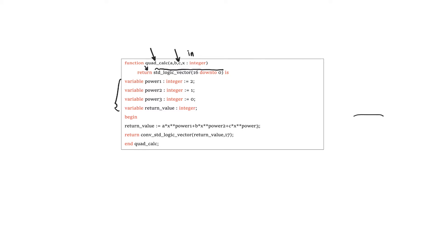In this case, we have four local variables declared for use within this function. After the begin keyword, we have the body of the function, which ends with the end keyword. We can use any statements within the body of the function that we can use in a process — any sequential statements. There is one exception: you cannot use wait statements in functions. At the end of the function, you have to use a return statement, and this return statement indicates what value we will be returning. The return value has to agree with the data type declared for the return type in the function declaration.